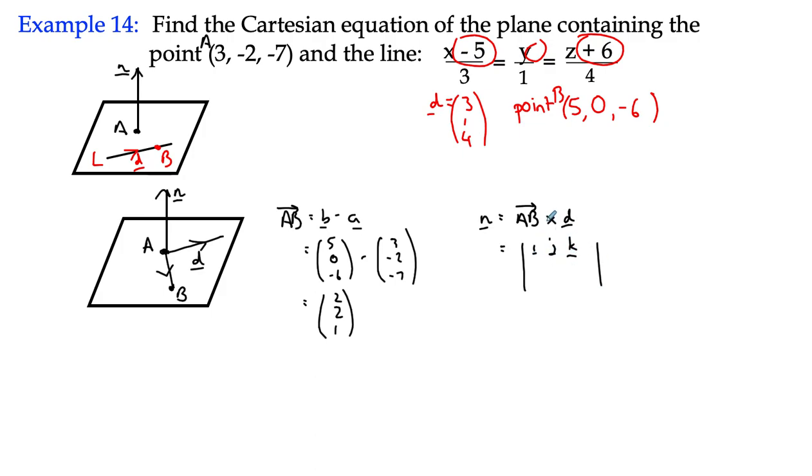It doesn't matter which way around you put these vectors. So 2, 2, 1, and what was the vector? D, 3, 1, 4. 3, 1, 4. And we can go ahead and work out what that vector product is using your preferred method.